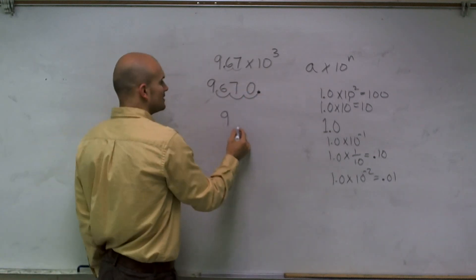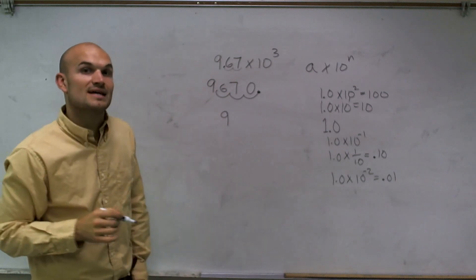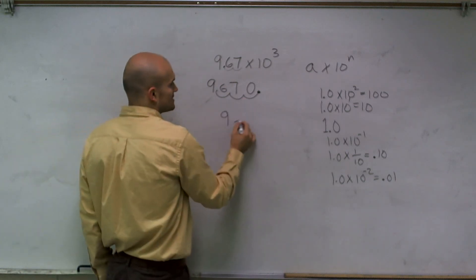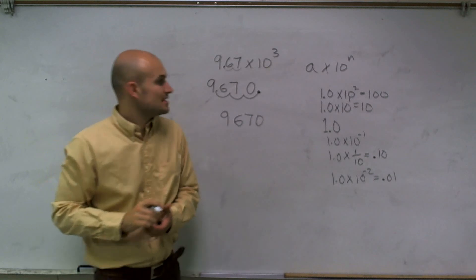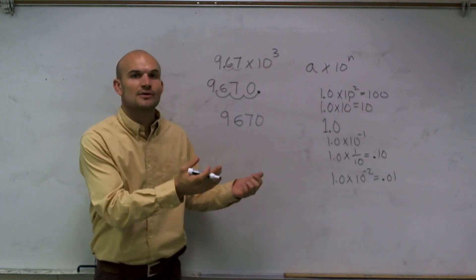I'm going to fill in that empty spot with a 0. So therefore, my final answer of 9.67 times 10 to the third is going to give me 9,670. And that's how you convert scientific notation to a regular number. Thanks.